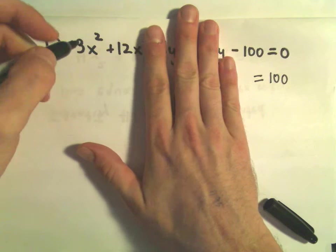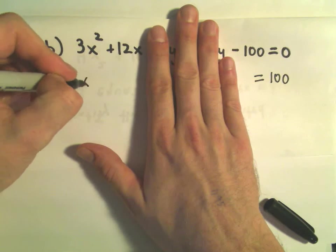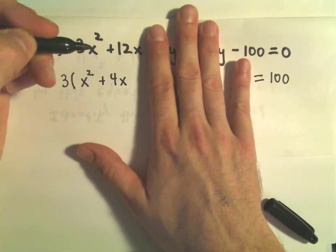On my x squared terms, I'm going to factor out the coefficient on the x squared, which would be a 3. So inside the parentheses, I would need x squared plus 4x.